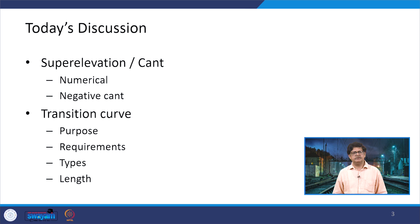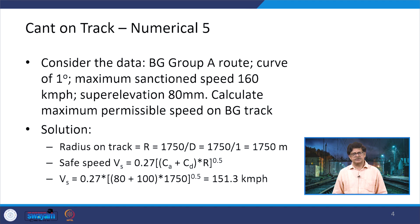After the numericals on negative cant, we will shift to transition curves, wherein we will discuss the purpose of providing a transition curve, the requirements that need to be taken care of, the various types of transition curves available, and finally how the length of the transition curve can be calculated. Starting with super elevation, continuing with the numericals from the previous lecture.